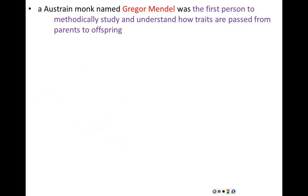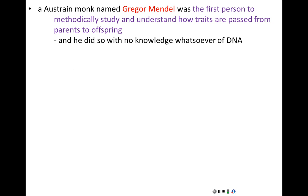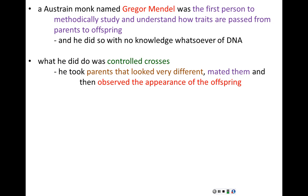The Austrian monk who gave us all of this insight was Gregor Mendel. He was the first person to methodologically study and understand how traits are passed from parents to offspring — to study inheritance. Remember, we had no idea what DNA was as a molecule when Mendel was doing this work. We had just begun to surmise that genetic information was contained in the nucleus of a living cell. Mendel did this work quite naive to what was really going on. He did his experiments with controlled crosses — taking parents with a known genotype and known composition of traits, mating those parents, and then collecting and observing the offspring.